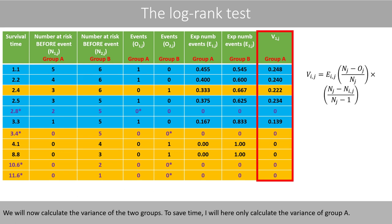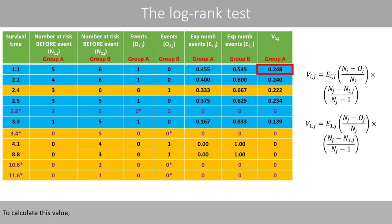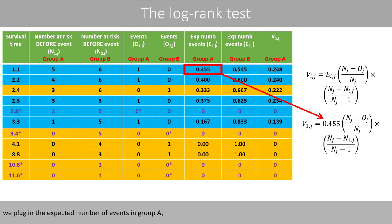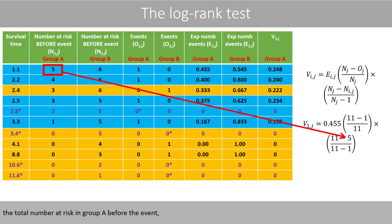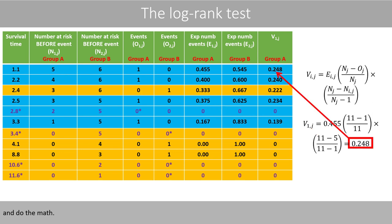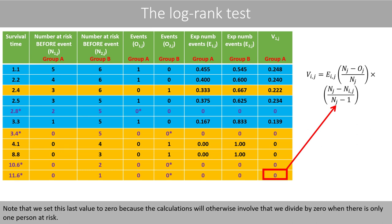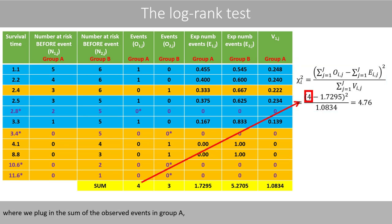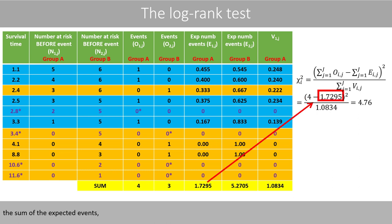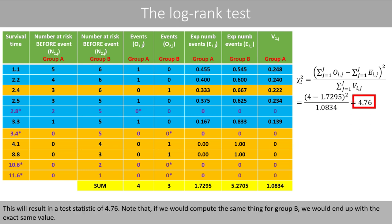We will now calculate the variance of the two groups. To save time, I will only calculate the variance of group A. To calculate this value, we plug in the expected number of events in group A, the total number of observed events, the total number at risk before the event, and the total number at risk in group A before the event. Note that we set the last value to zero because the calculations would otherwise involve dividing by zero when there is only one person at risk. We then sum the columns and compute the chi-square test statistic for group A, plugging in the sum of observed events in group A, the sum of expected events, and the variance of group A. This results in a test statistic of 4.76.